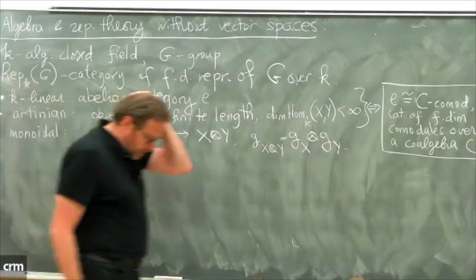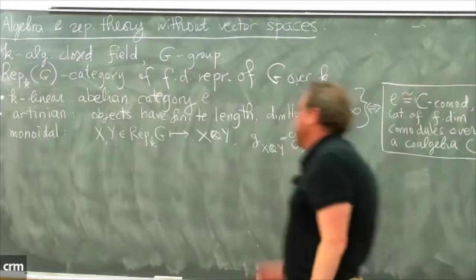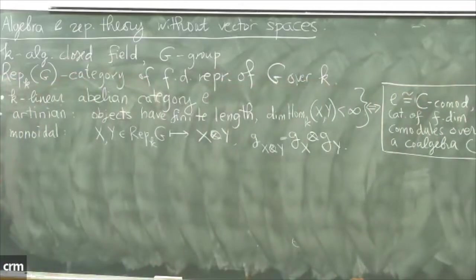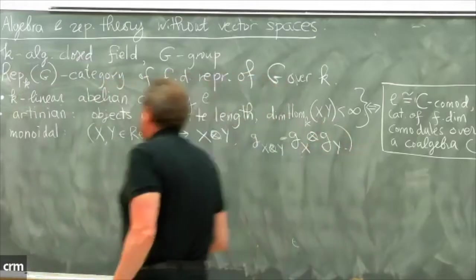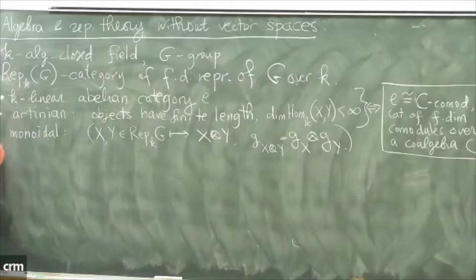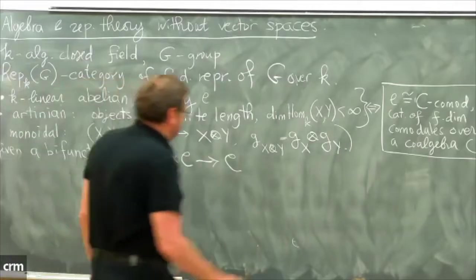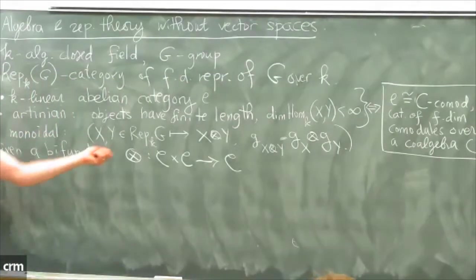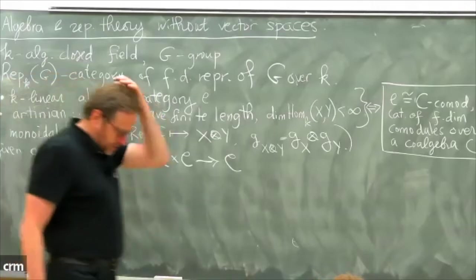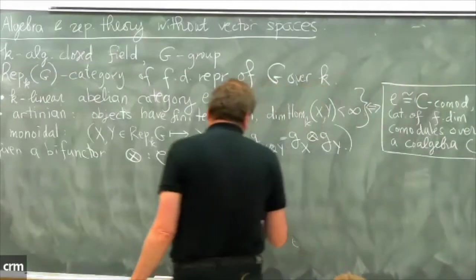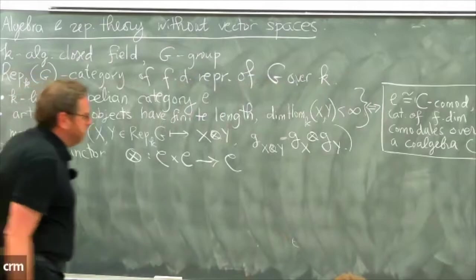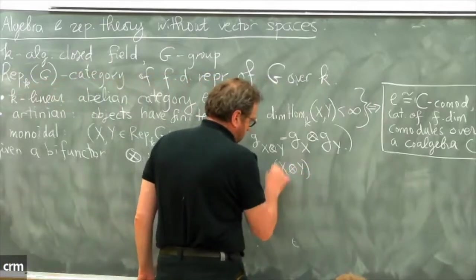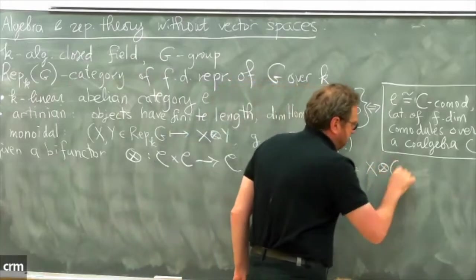So how do we abstract this away? This leads to the notion of a monoidal category. A category is monoidal if we are given a bifunctor — a tensor product. It's a categorical analog of a monoid, where we have a semigroup law. The first axiom we impose is associativity: we want (x ⊗ y) ⊗ z = x ⊗ (y ⊗ z). But this is too naive in category theory — we don't want to say objects are equal, we want to say they are isomorphic.